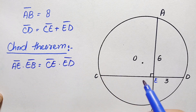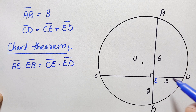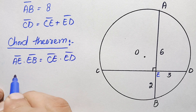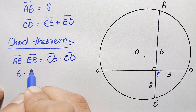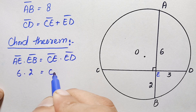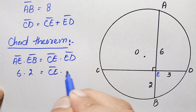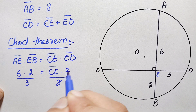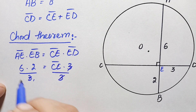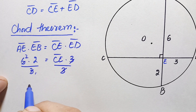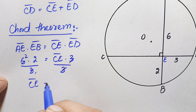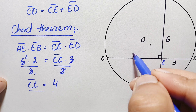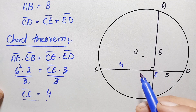We have been given the values of three segments: AE, EB, and ED. Substituting the values: AE is 6 units, EB is 2 units, CE is not given, and ED is 3 units. Dividing both sides by 3, the threes cancel, giving 6 times 2 divided by 3 equals CE. So the value of segment CE will become 4 units.